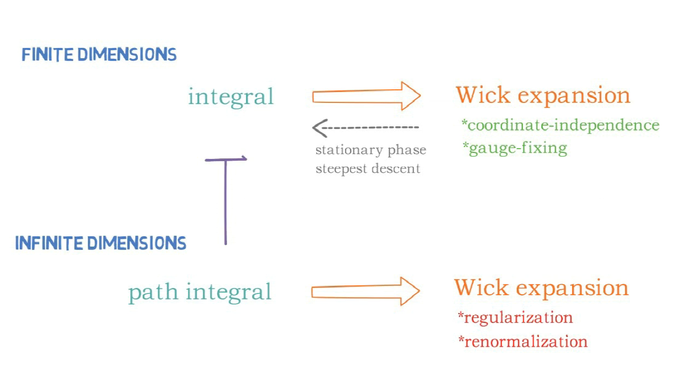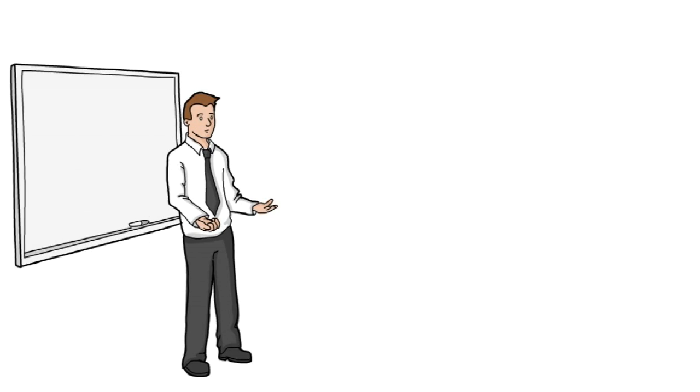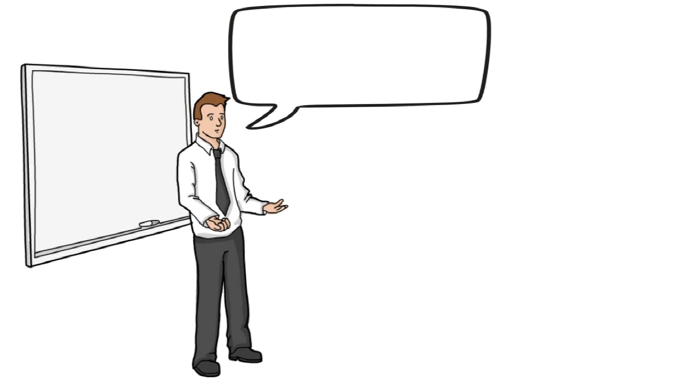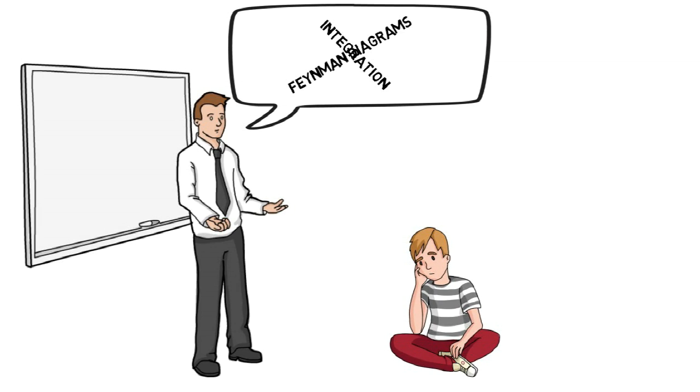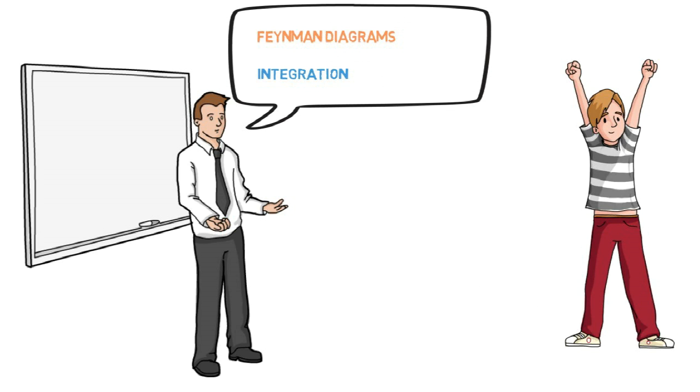The bottom line is that formal analogies between path integrals and ordinary integrals are really analogies between Wick expansions. Only in favorable circumstances can we relate the Wick expansion to integration, in which case formal analogies between integrals can be made. And so it's the conflation between the Wick expansion and integration that has led to widespread confusion in this subject. So I hope that the proper conceptual principles made explicit in my paper will make it easier for those seeking rigor to read and understand the quantum field-theoretic literature.